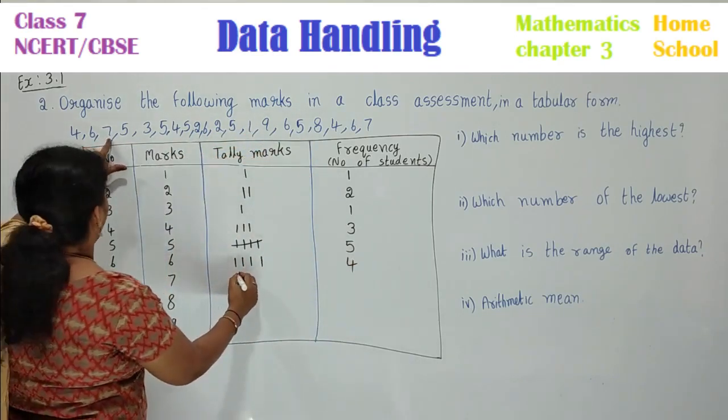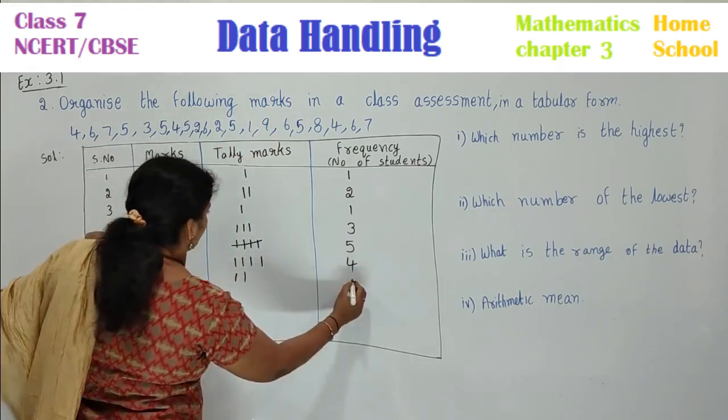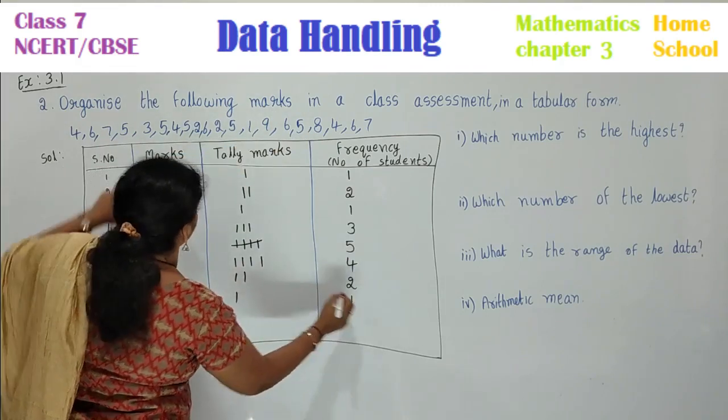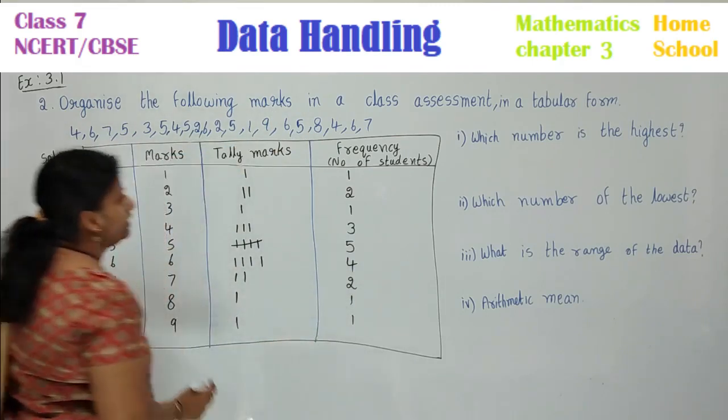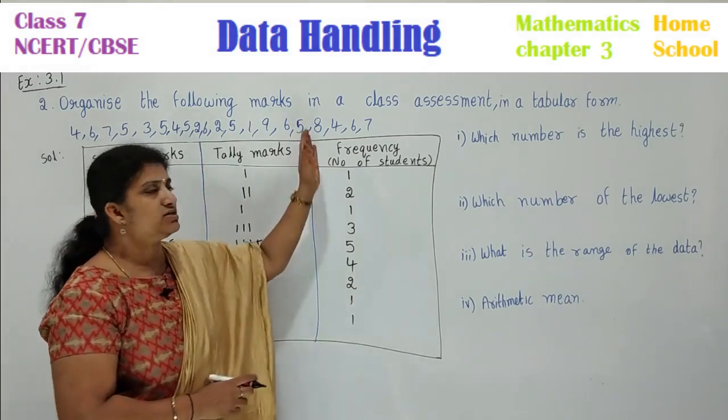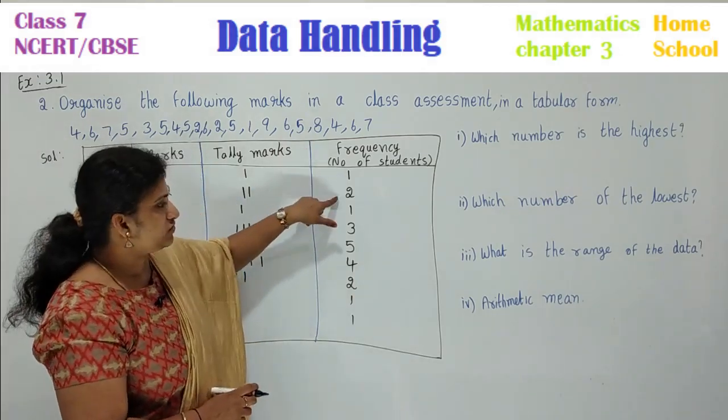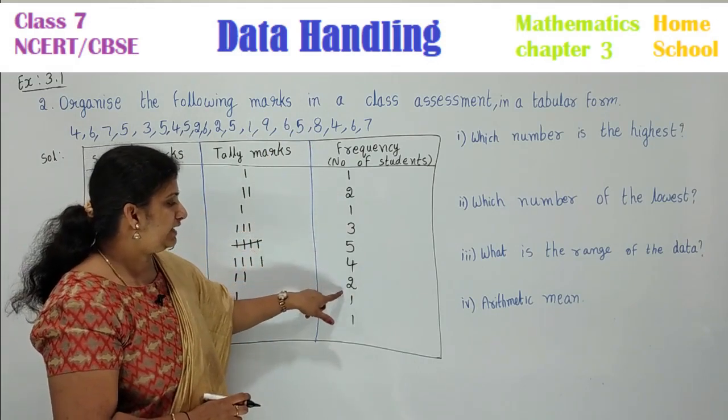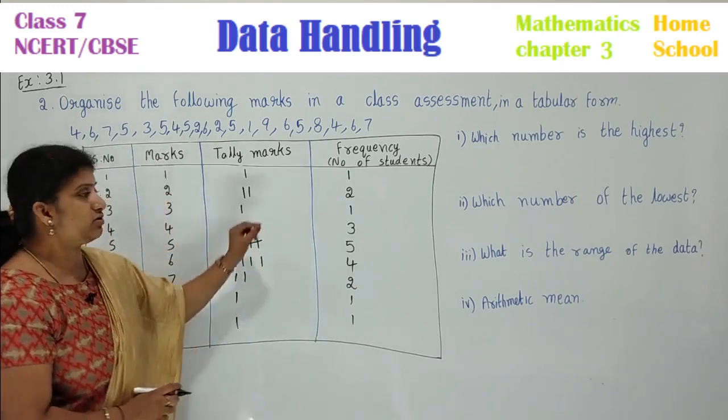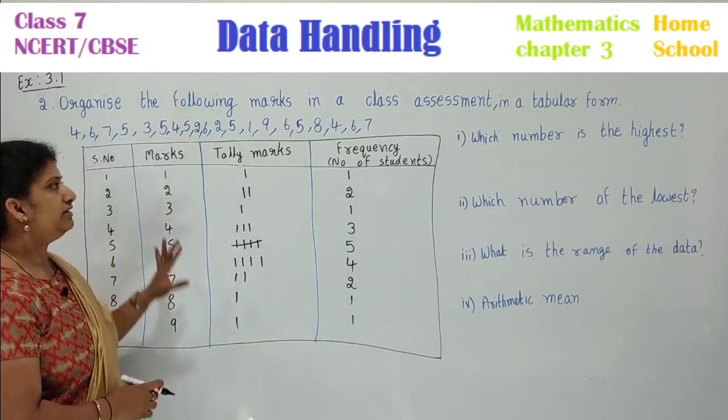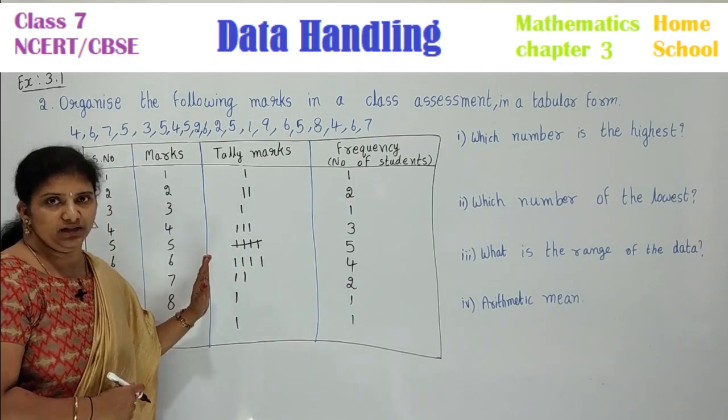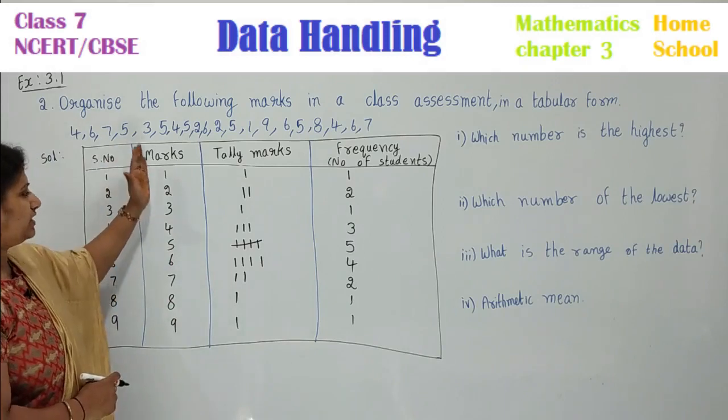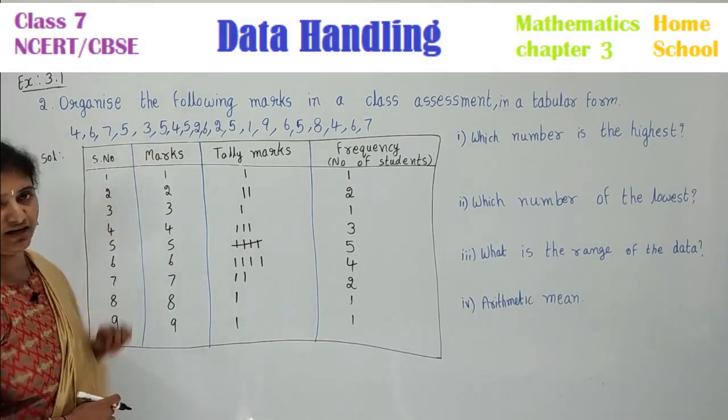8 - observe here children, 8 only 1 time. 9, only 1 time. Now, just let's count whether all the scores we have written in the table or not: 1 plus 2 is 3, 4, 7, 12, 16, 18, 19, 20. Yes, 20 people's scores we have written here. This is the way we need to write in a table.